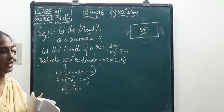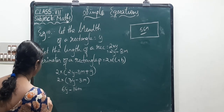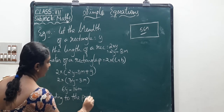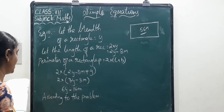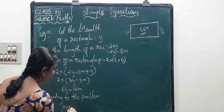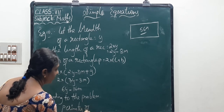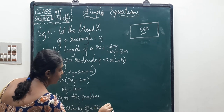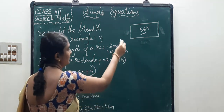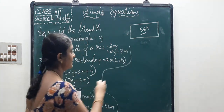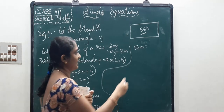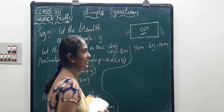According to the problem, the total perimeter is 56 meters. So 56 equals 6Y minus 16 meters.